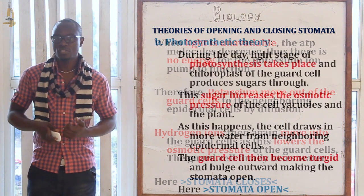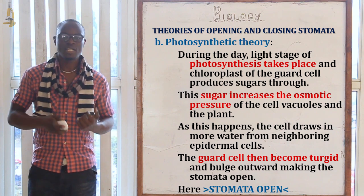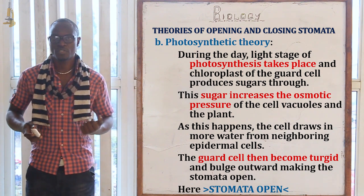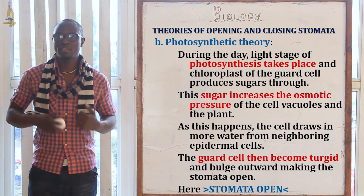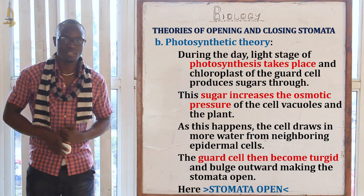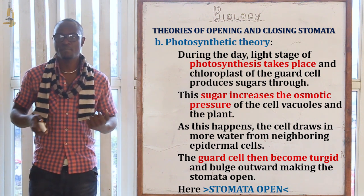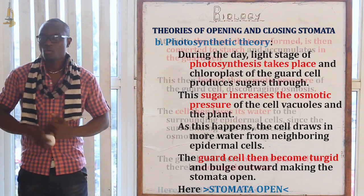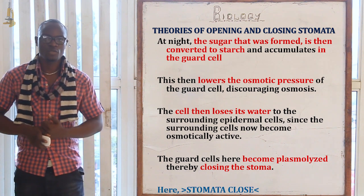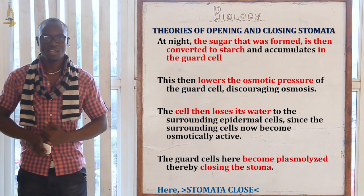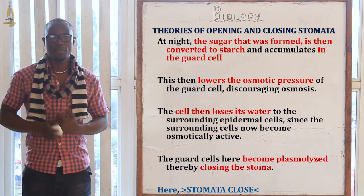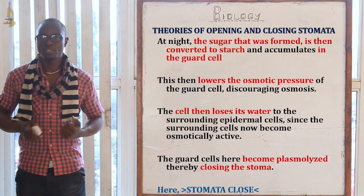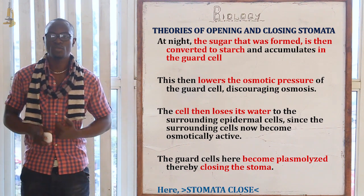In the photosynthetic theory, during the day the chloroplasts of the guard cells produce sugars through photosynthesis. This sugar raises the osmotic pressure of the vacuole, causing the cells to draw more water from neighboring epidermal cells. The guard cells become turgid and bulge outward, opening the stomata. At night or in the absence of light, the sugar is converted to starch and accumulates in the guard cell, lowering osmotic pressure. The guard cells lose water to surrounding epidermal cells, become plasmolyzed, and the stomata close.